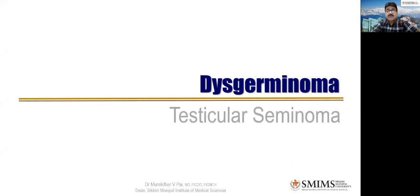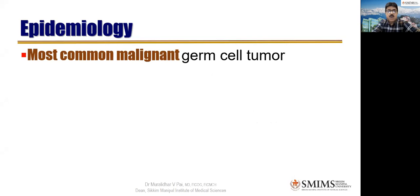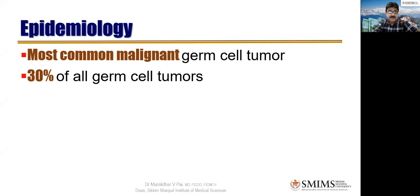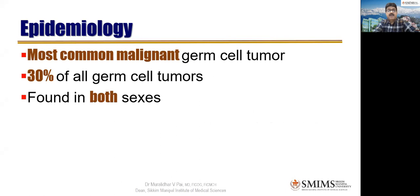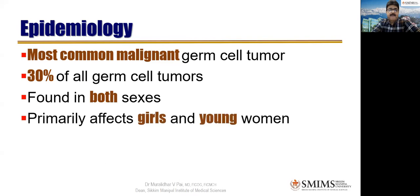Dysgerminoma has a male version — testicular seminoma. Epidemiologically, they are the most common malignant germ cell tumor, 30% of all germ cell tumors. They are found in both sexes. Primarily affects girls and young women — germ cell tumors are common in younger age groups because the germ cell, the ovum, is only in the reproductive age group. They are often bilateral because both ovaries will have the ova.